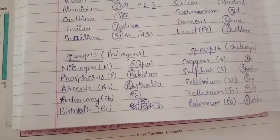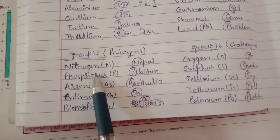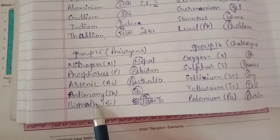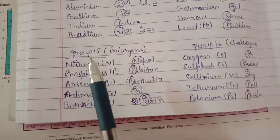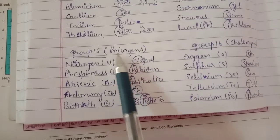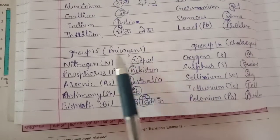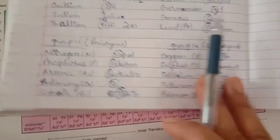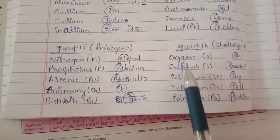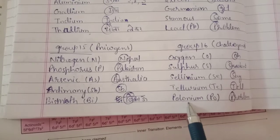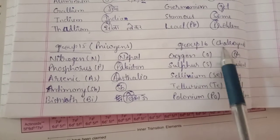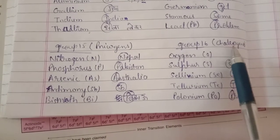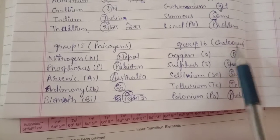Group 15 contains nitrogen, phosphorus, arsenic, antimony, and bismuth. Group 15 is collectively called pnicogens (P-N-I-C-O-G-E-N-S). Similarly, group 16 has oxygen, sulfur, selenium, tellurium, and polonium, and this group's name is chalcogens (C-H-A-L-C-O-G-E-N-S).